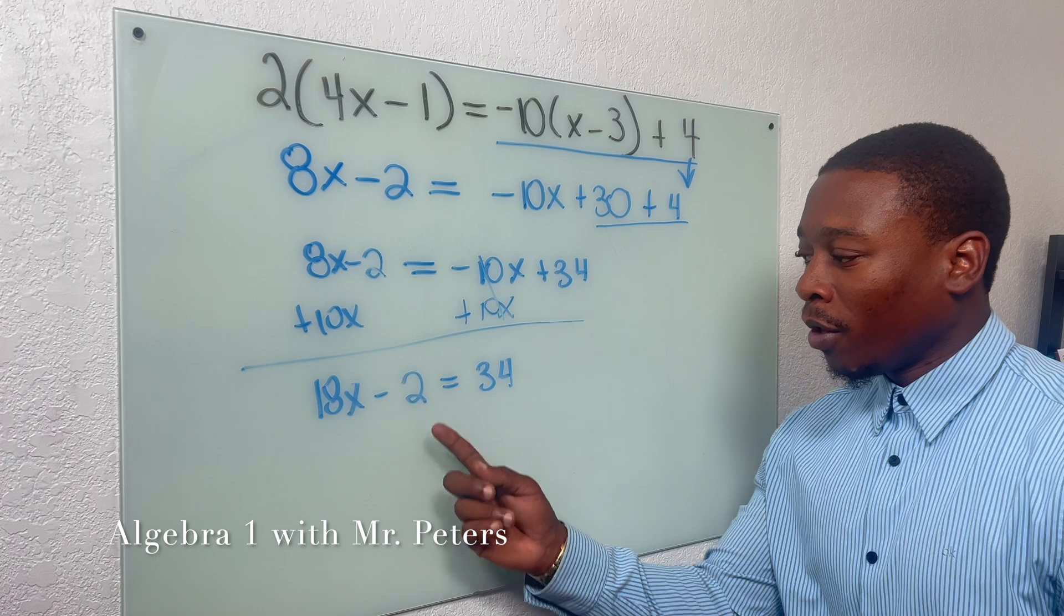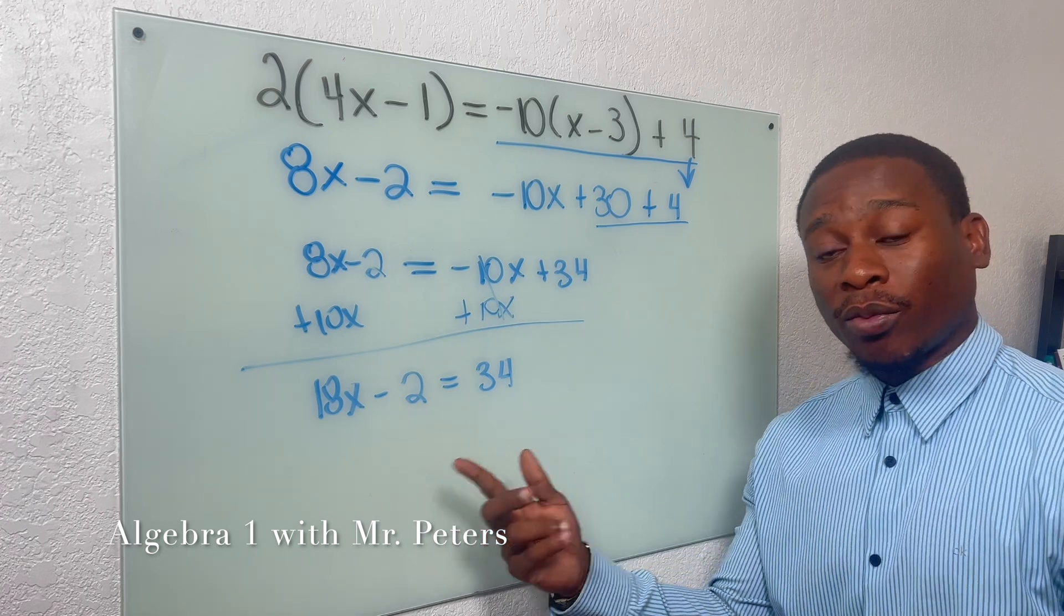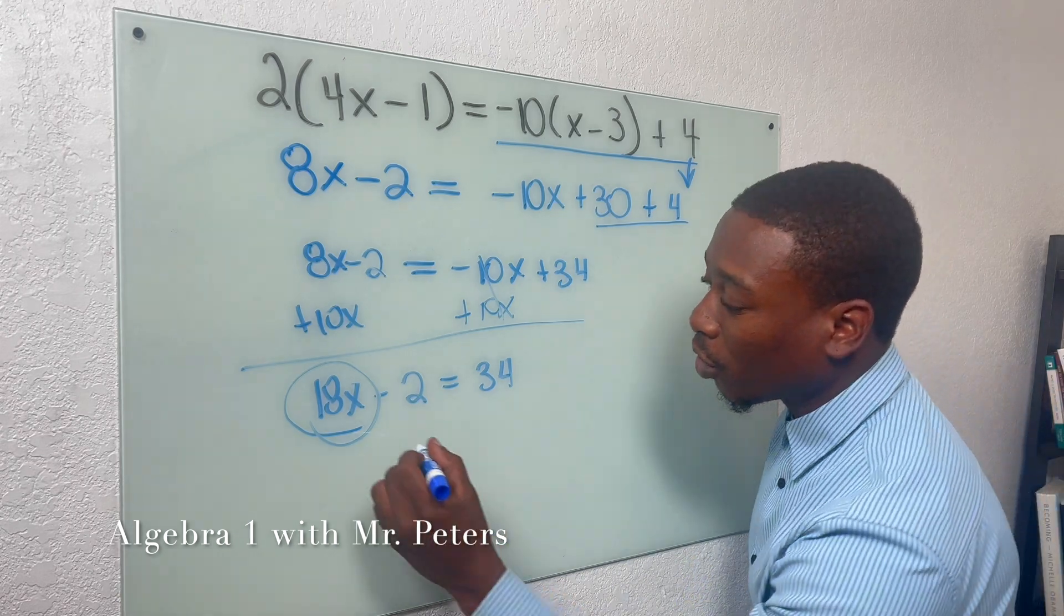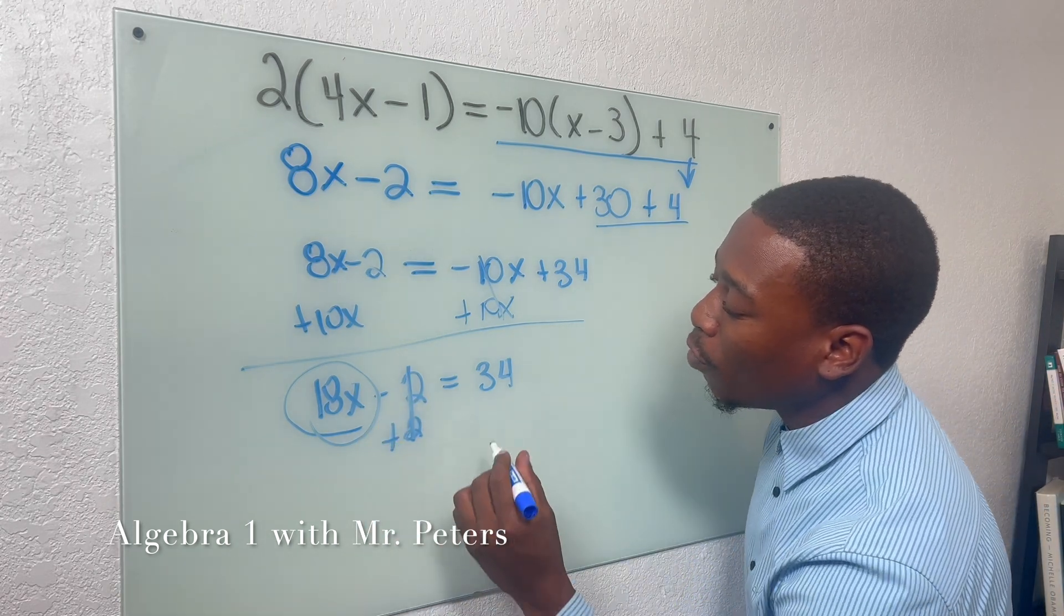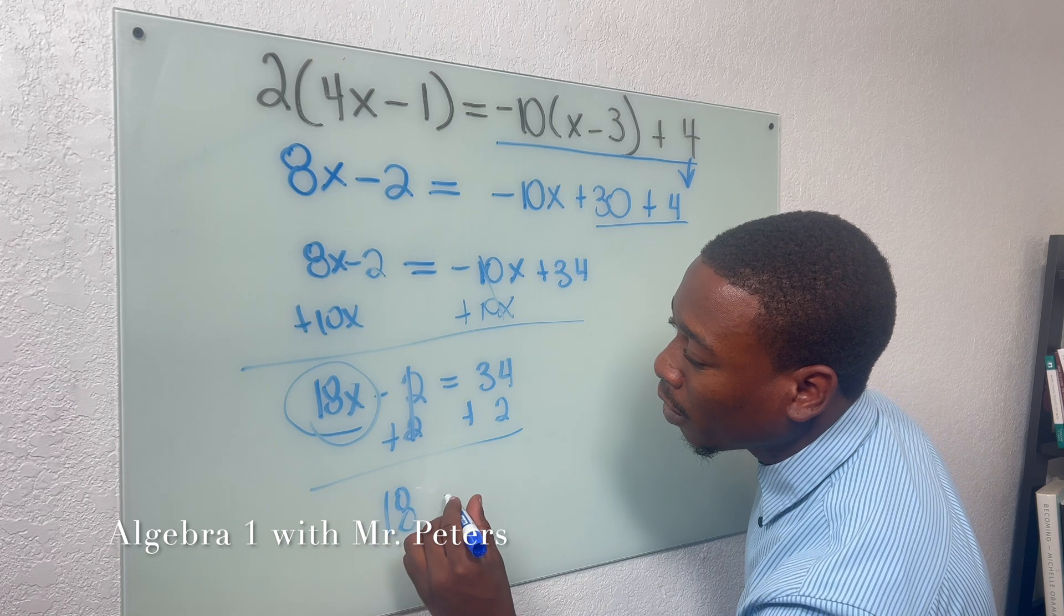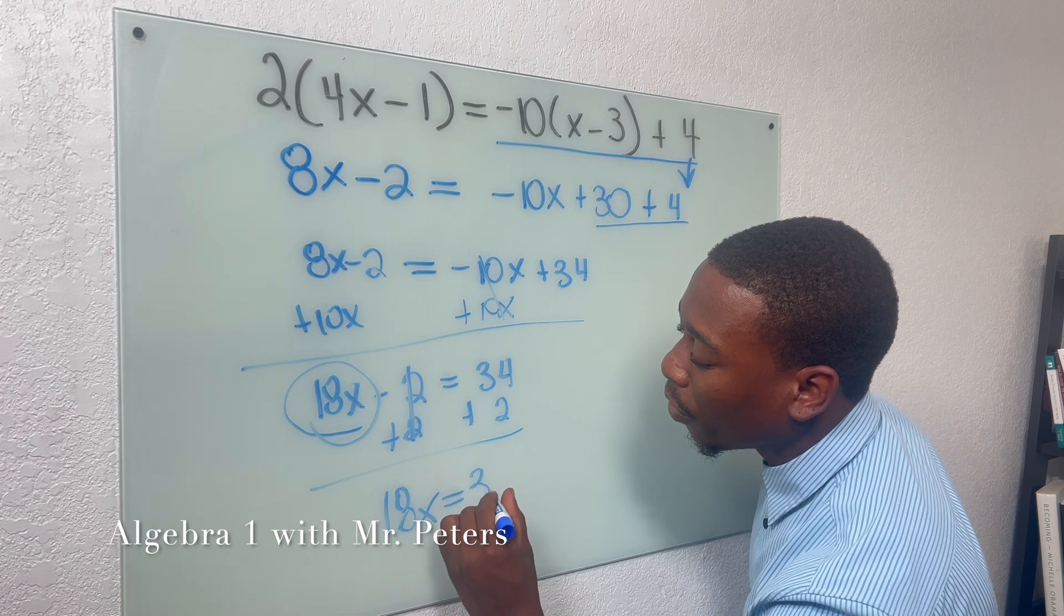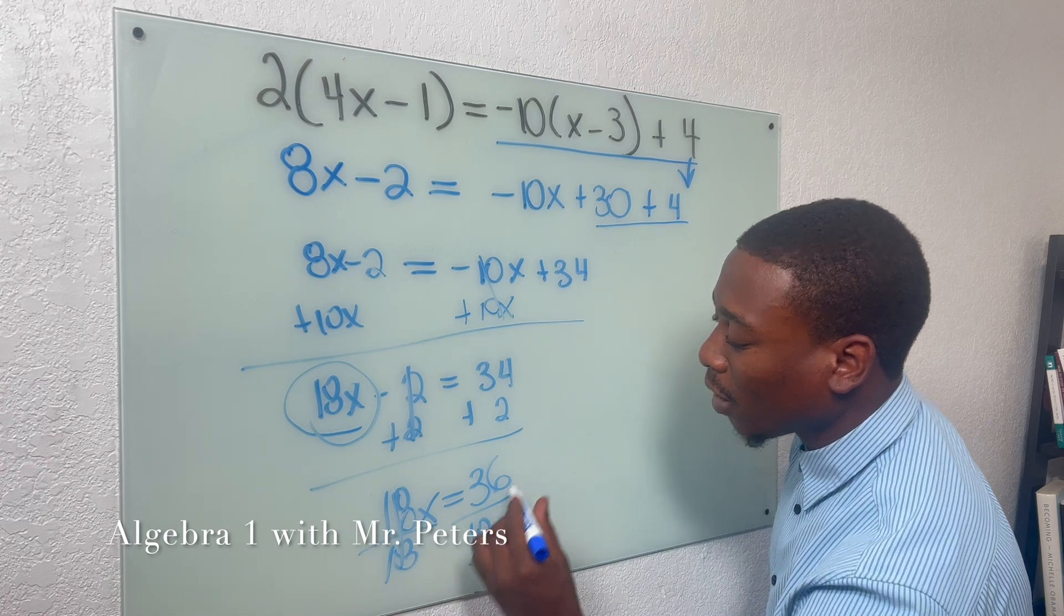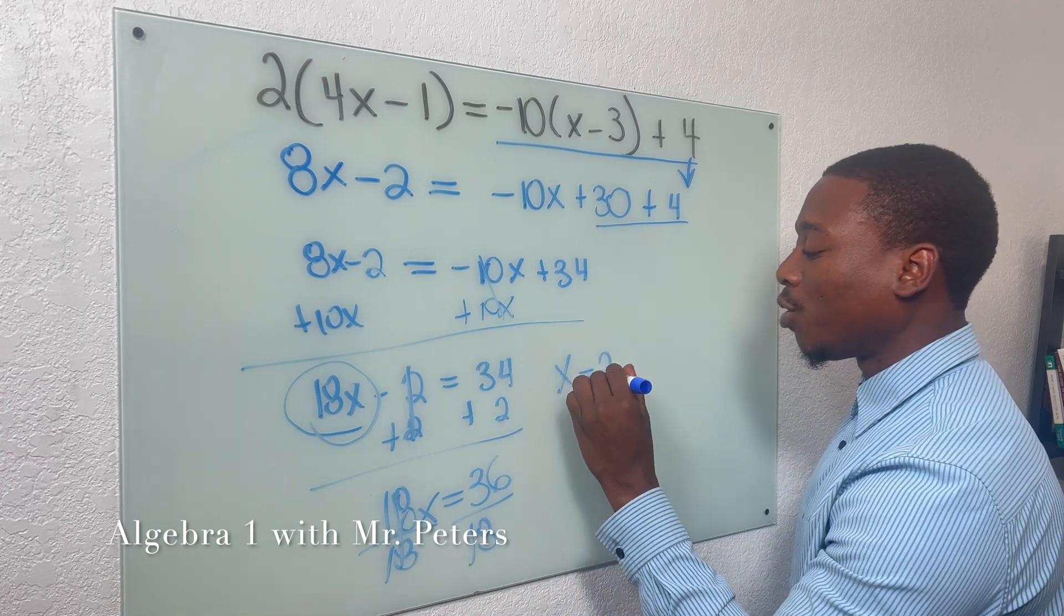We should know we have another like term and the variable is not by itself. So let's get it by itself by moving 2 to the other side. So we have 18x is equal to 36. And our final answer would be x is equal to 2.